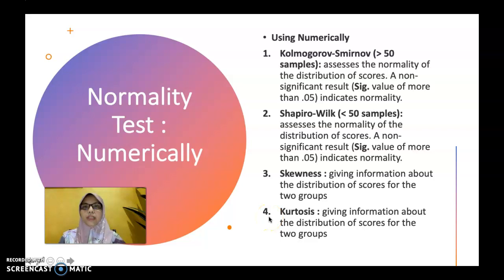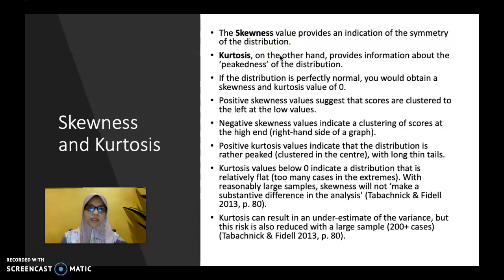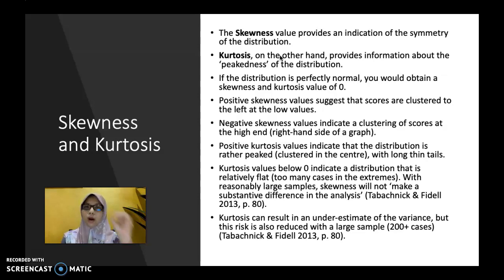Thirdly, you can use skewness, which gives information about the distribution of scores for the groups. Kurtosis also gives information about the distribution of scores. The skewness value provides an indication of the symmetry of the distribution, whereas kurtosis provides information about the peakedness of the distribution. If the distribution is perfectly normal, you would obtain a skewness and kurtosis value of 0, though this seldom occurs particularly in social sciences.